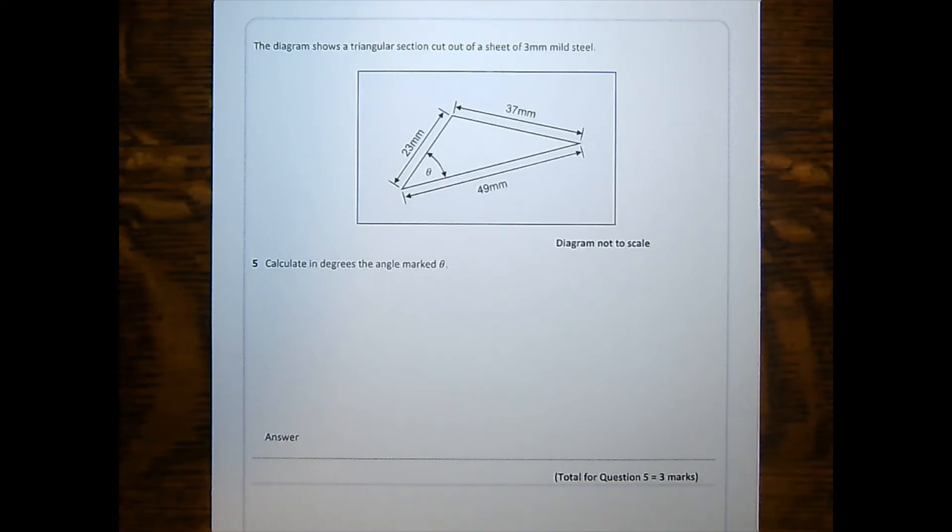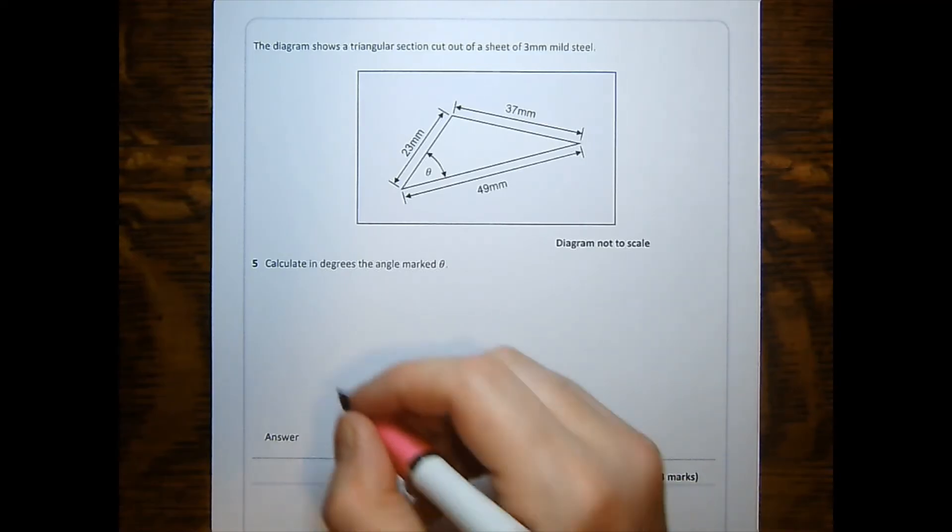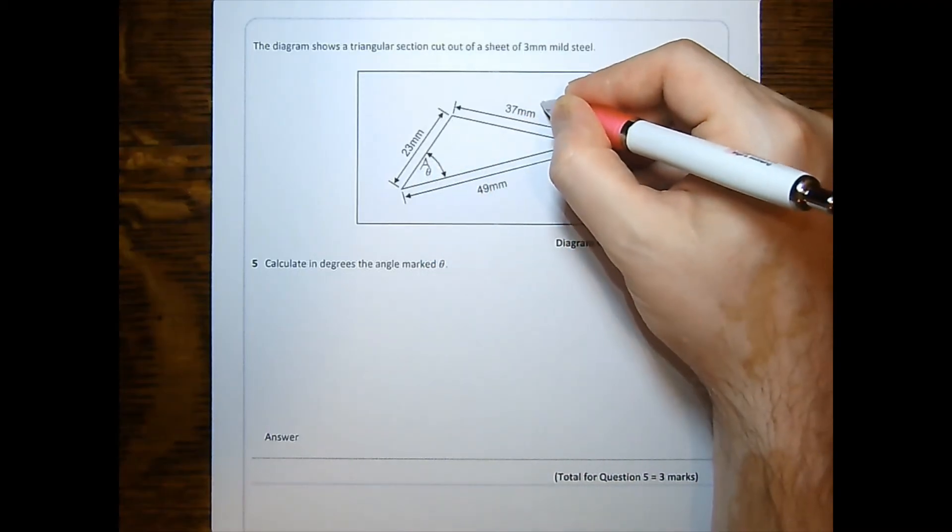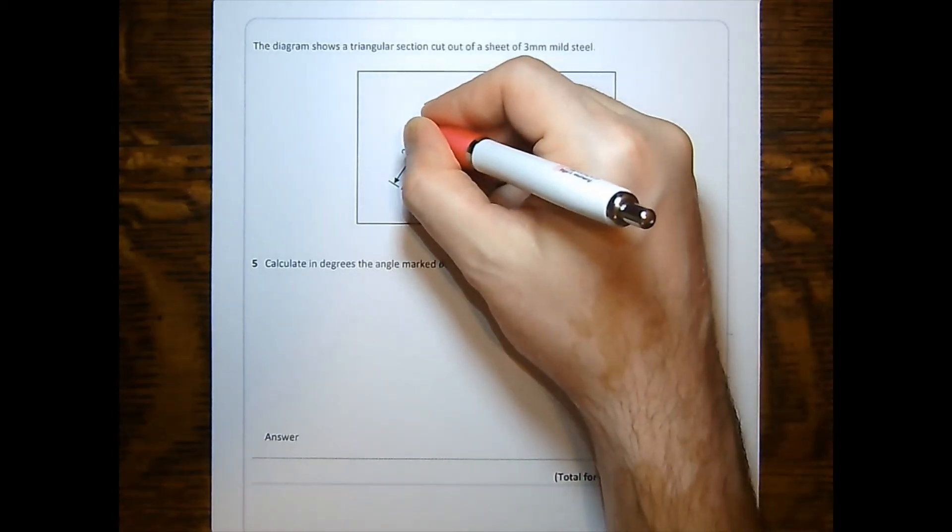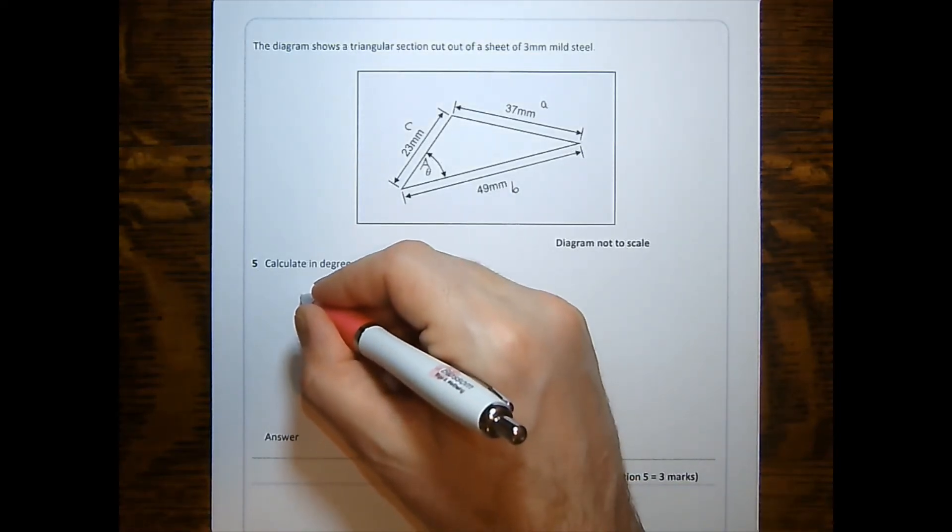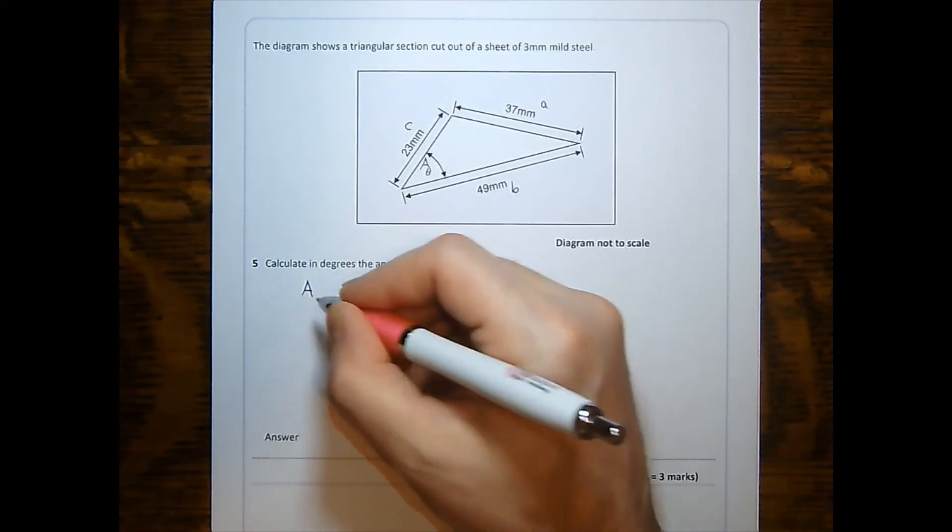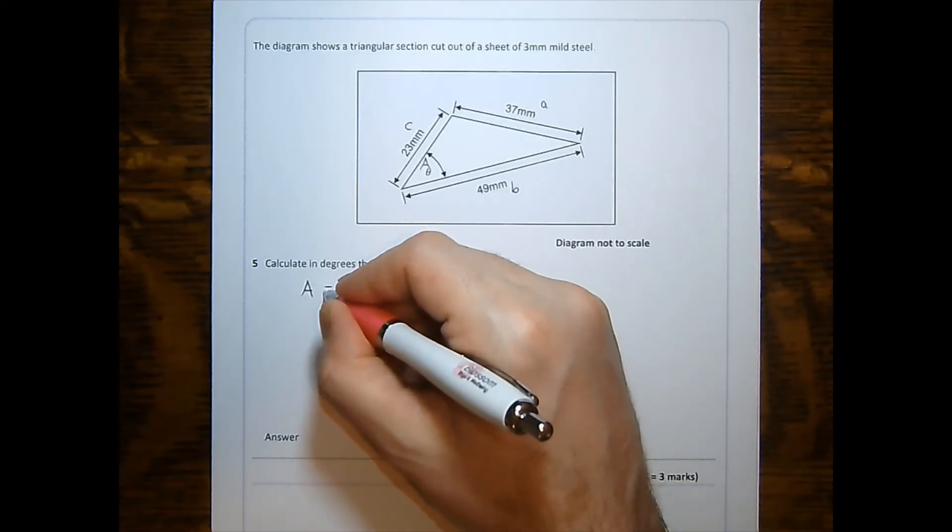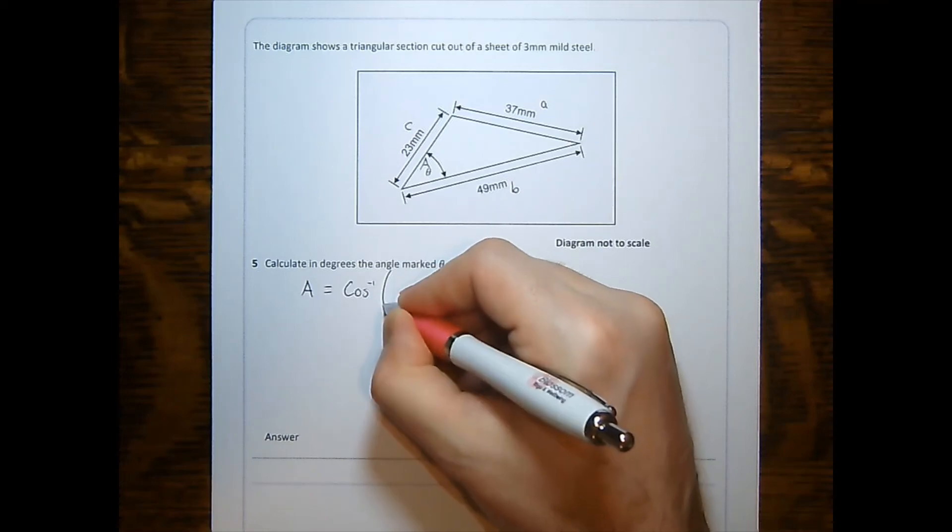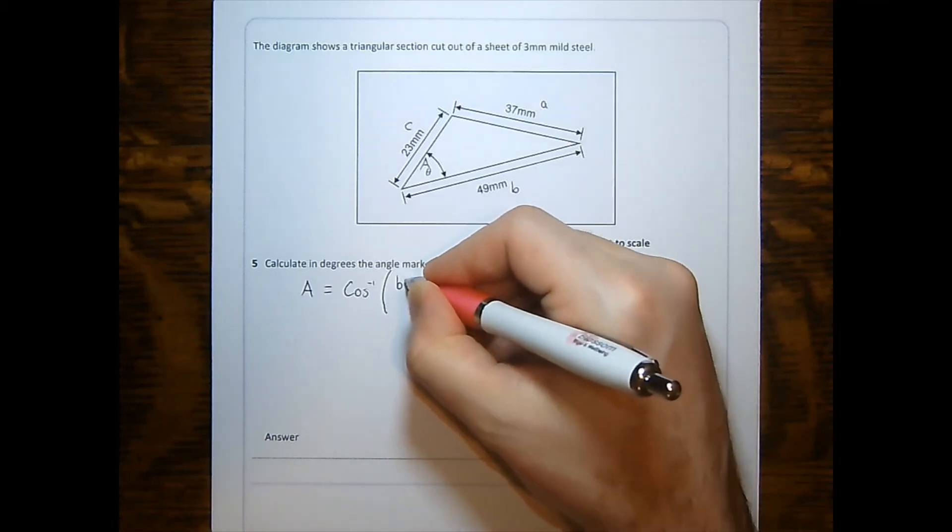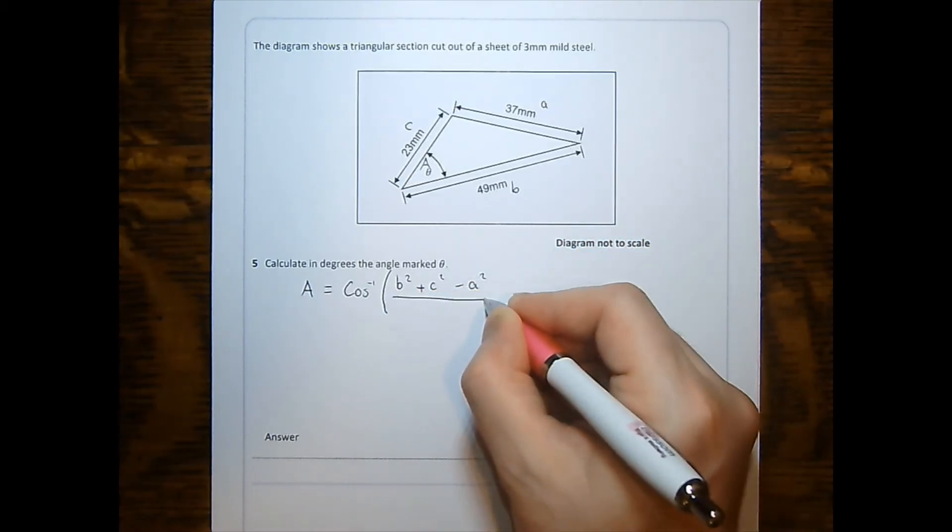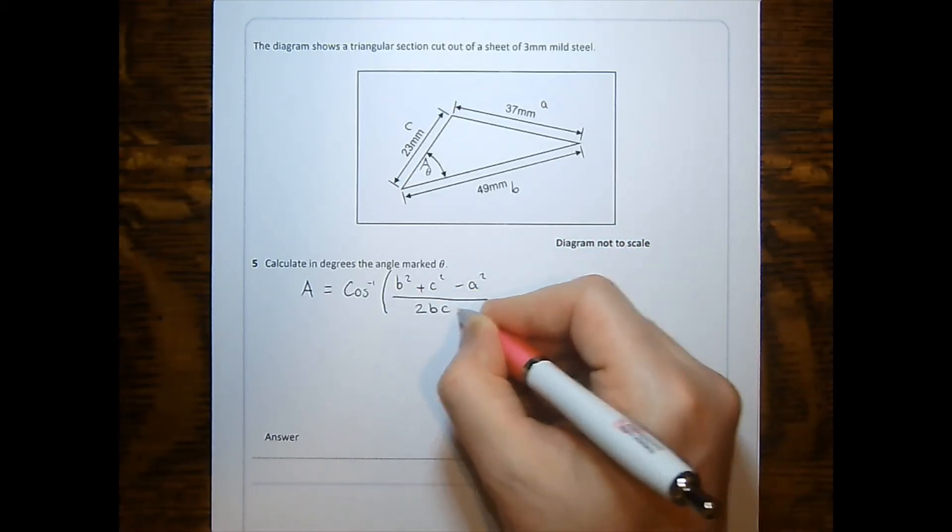The version that we either have to memorize or rearrange for ourselves. If this is the angle we're looking for, I will call that A, this lowercase a, and either of these can be b or c. The formula, which you've either rearranged earlier or remember, is the angle A is equal to the inverse cosine of b squared plus c squared minus a squared all over 2bc.